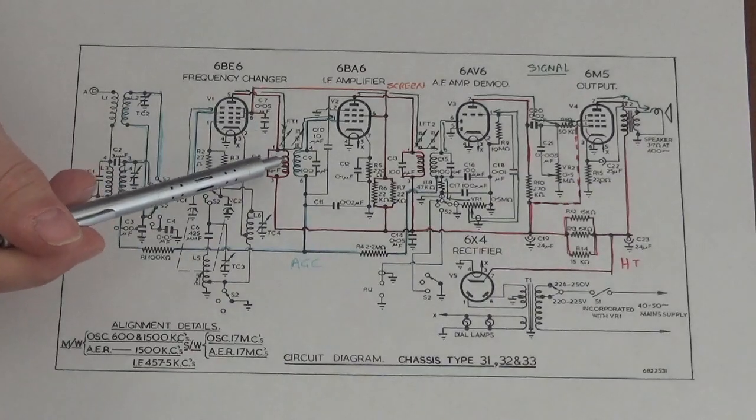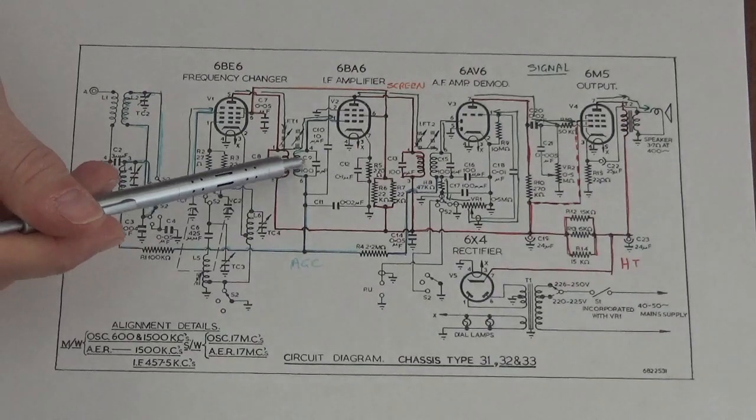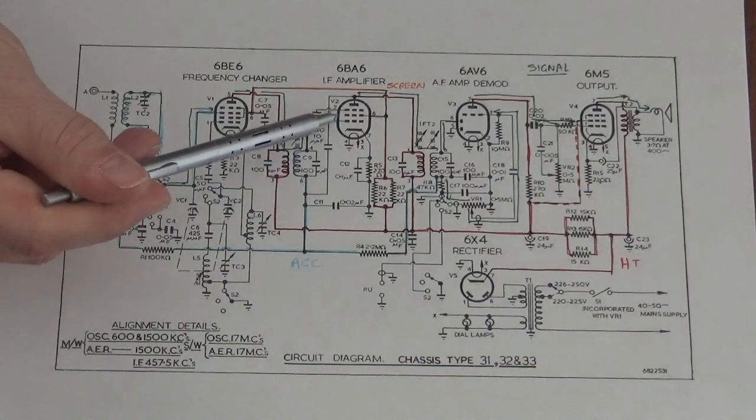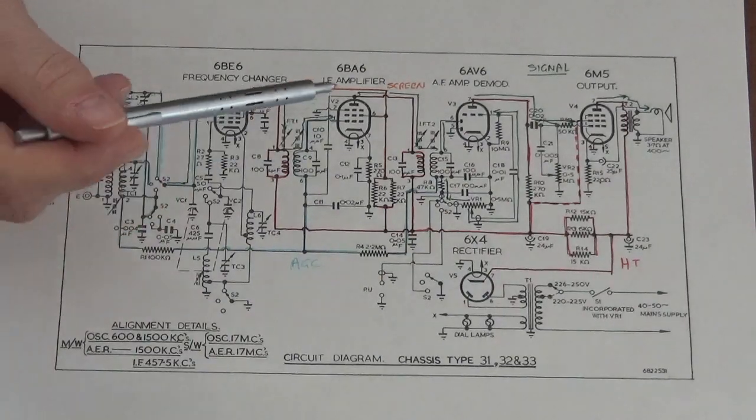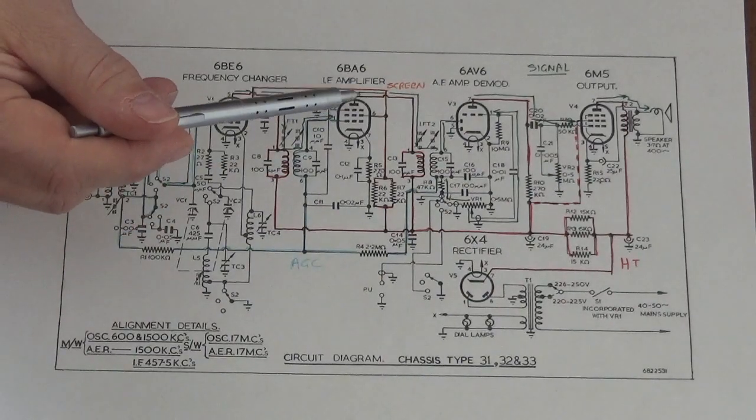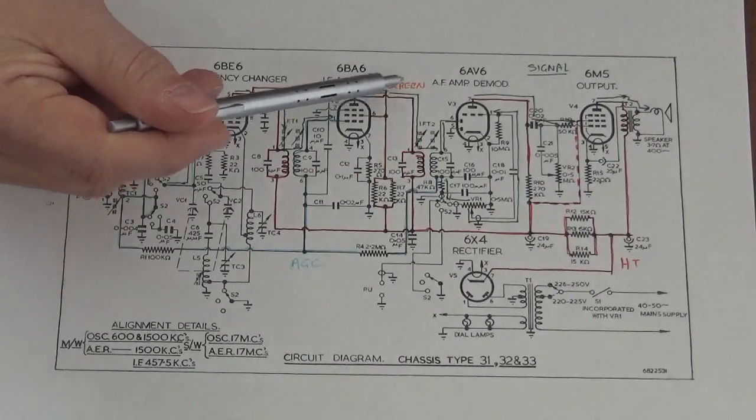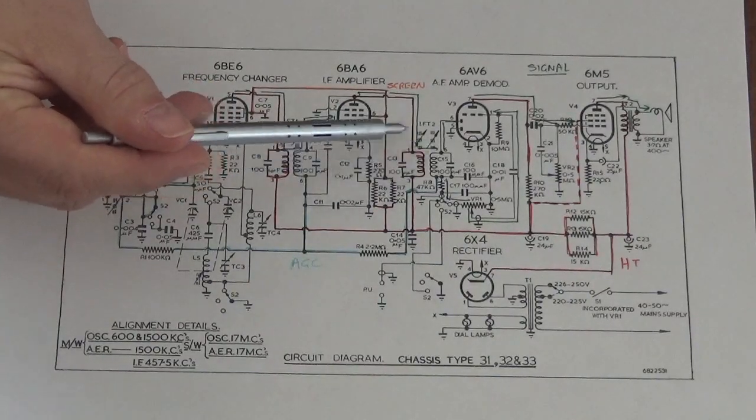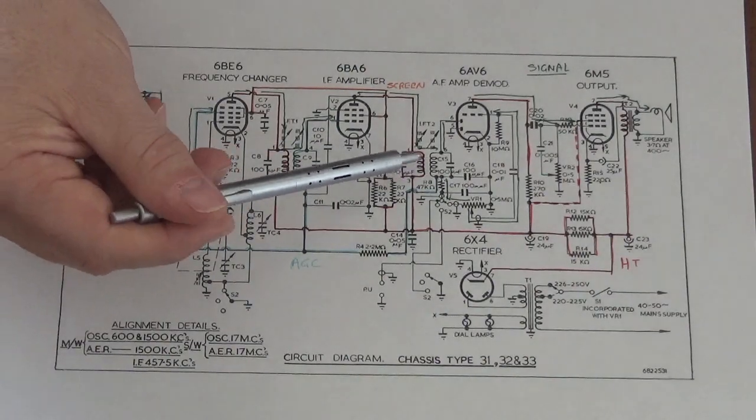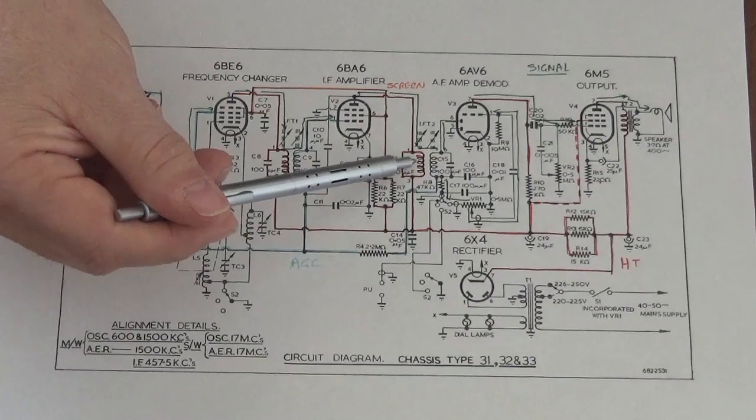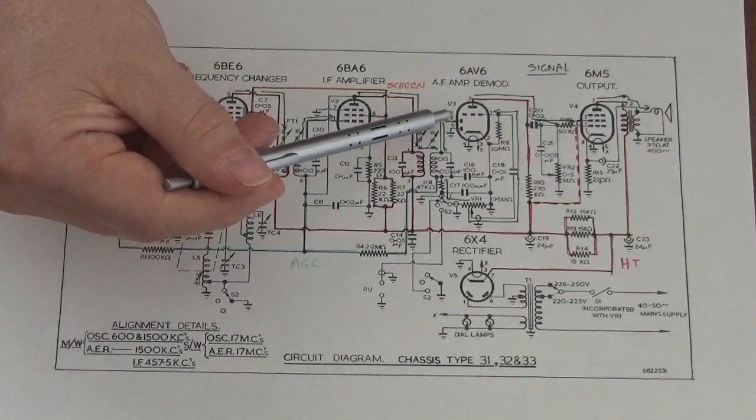Our signal that we're interested in is appearing across this transformer and coupled through onto the grid of our IF amplifier valve, which amplifies that signal. That appears on the anode of this valve, where again we have another tuned circuit and transformer.